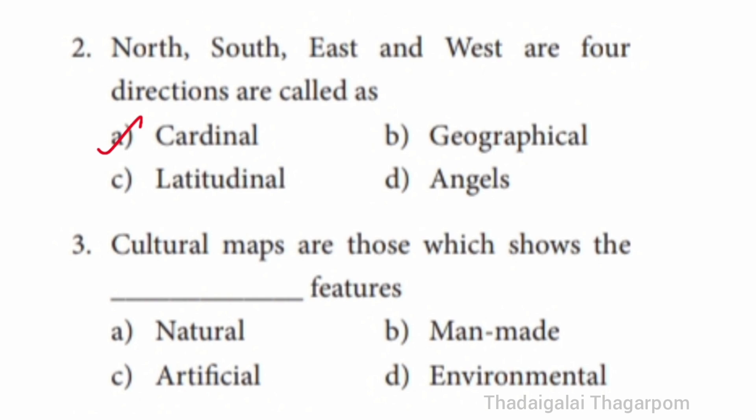Question 3: Cultural maps are those which show – Natural Features, Manmade, Artificial, or Environmental features. The correct answer is option B – Manmade. Cultural maps are those which show Manmade features.